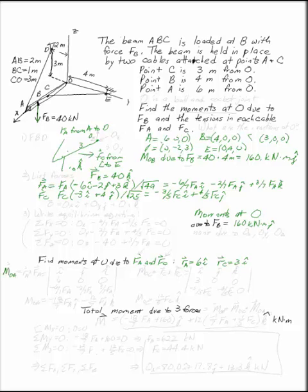And if I want to do this using vector methods, I can say the moment at O due to the force FA is the cross product i, j, k. R goes on top: 6, 0, 0. F goes on the bottom.